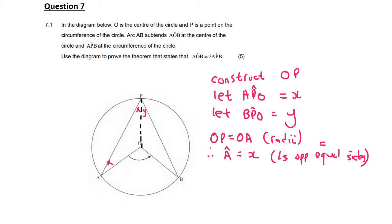And then we're going to do the same for Y. We're going to say that OP is also equal to OB. It's also because of radii. And then we'll say the same thing. We'll say that, therefore, angle B is equal to Y. And that's also because of angles opposite equal sides. So this is Y.